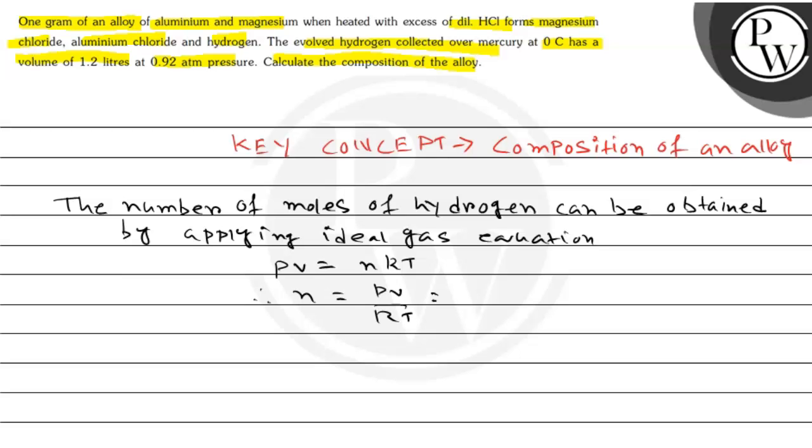Now let's plug in all the values. P is 0.92, V is 1.2 liters. P's unit is atm and V's unit is liter, so we get liter atmosphere. For R, we'll use the value in liter atmosphere units, which is 0.0821. T is 0 degrees Celsius converted to Kelvin, which is 273. So calculating this, the value comes out to be 0.0493 mol. This is the value of n.